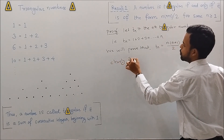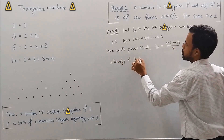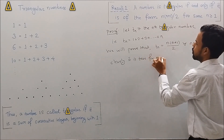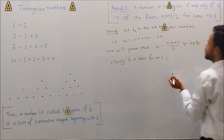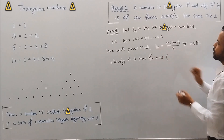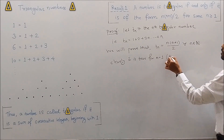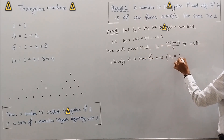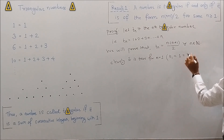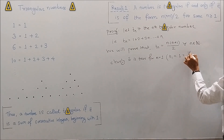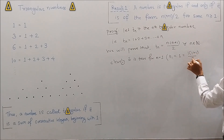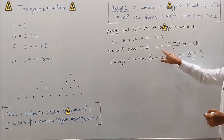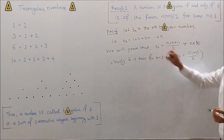Clearly it is true for n = 1. When we put n = 1, we get T_1 = 1, and 1 can be written as 1·(1+1)/2 = 1. So the result holds for n = 1.